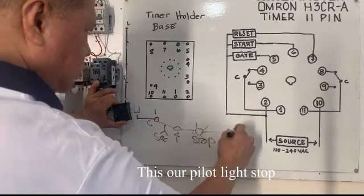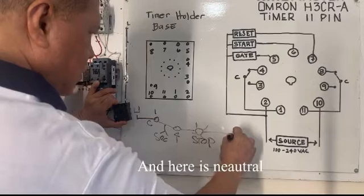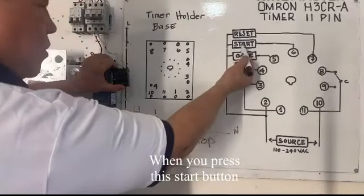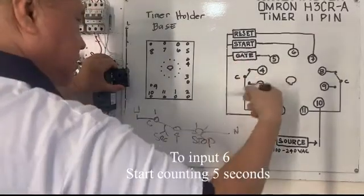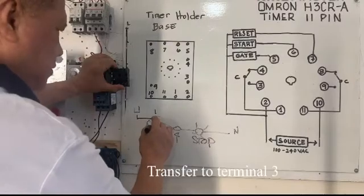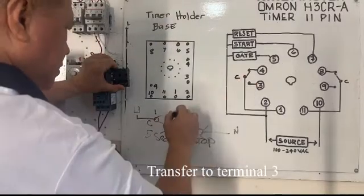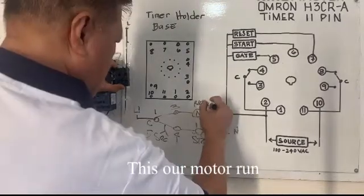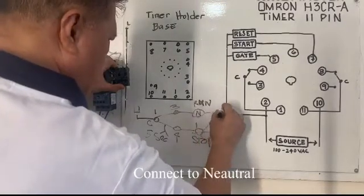And this one 2, neutral. When you press this start button to input 6, timer counting 5 seconds, transfer to 3, terminal 3. This is our motor run. Okay, unig to yan sa neutral.